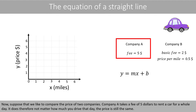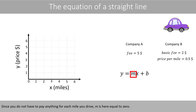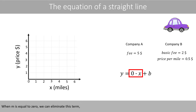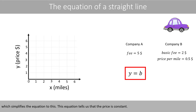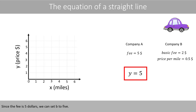Now suppose that you like to compare the price of two companies. Company A takes a fee of 5 dollars to rent the car for a whole day. It does therefore not matter how much you drive that day — the price is still the same. Since you do not have to pay anything for each mile you drive, M is here equal to 0. When M is equal to 0, we can eliminate this term, which simplifies the equation. This equation tells us that the price is constant.